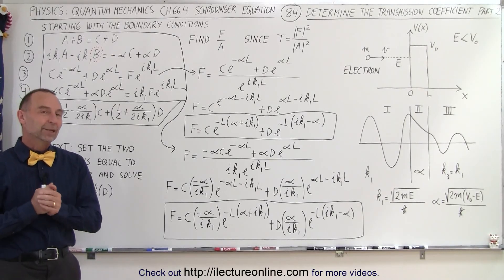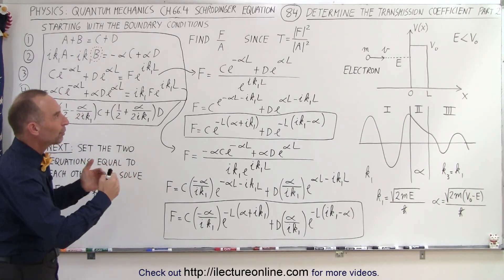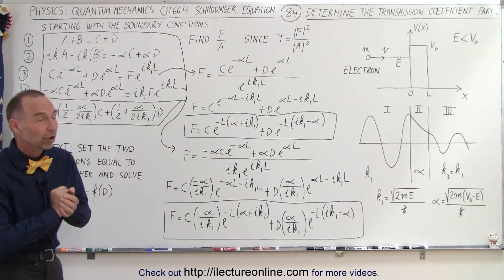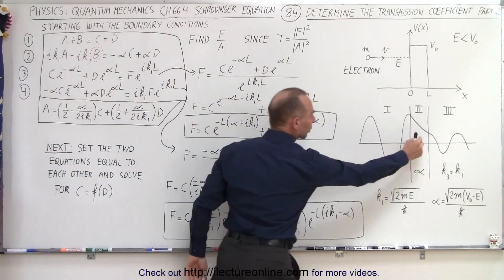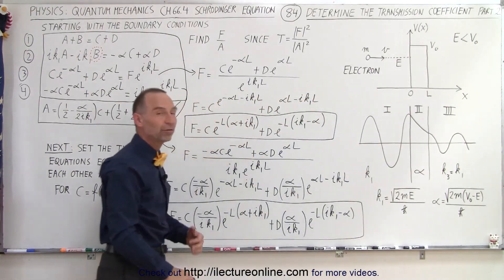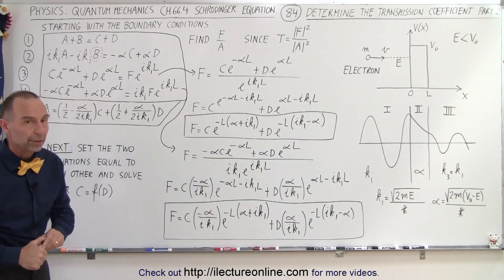Welcome to iLectureOnline. Remember here what we're trying to do is find the transmission coefficient starting with the boundary conditions on both sides of the barrier with the three functions from region 1, 2, and 3.